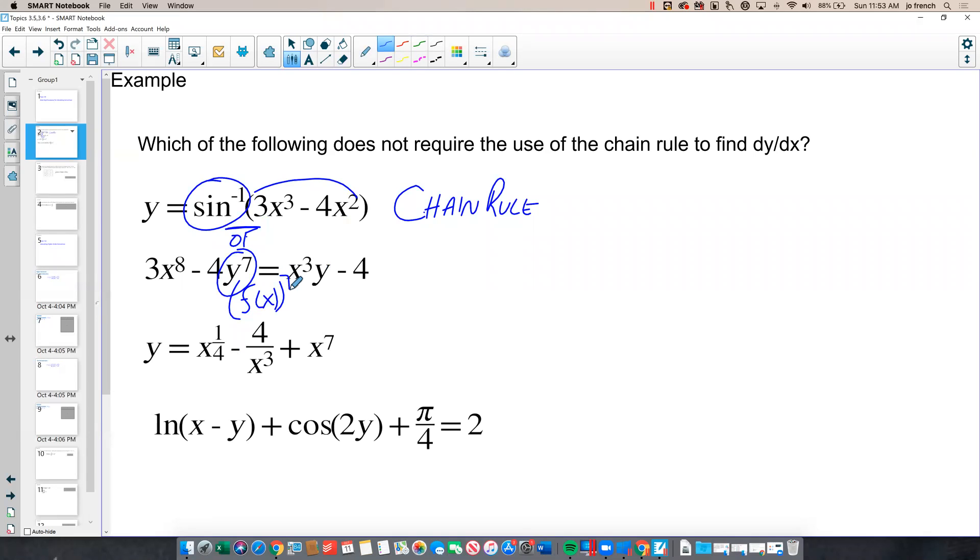This third example, y equals x to the one-fourth minus 4 over x cubed plus x to the seventh. Each of these terms is a standard power term expression. So I don't need the chain rule here. This is simply a power function for y.